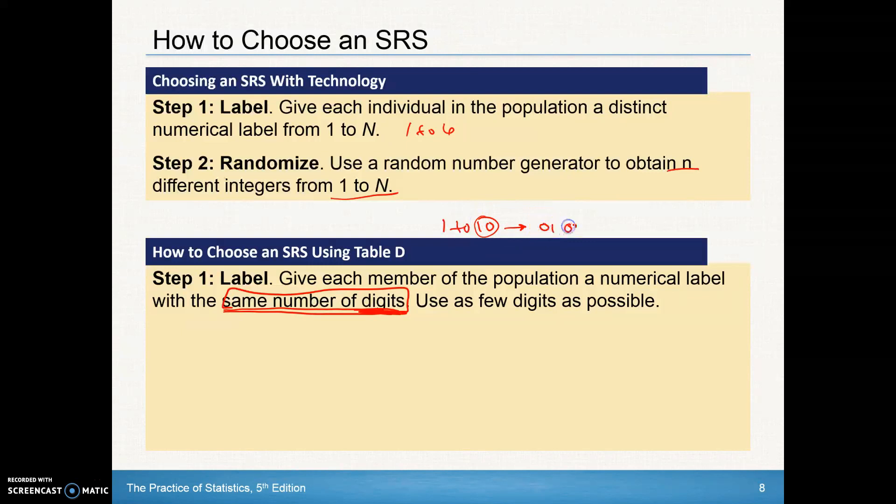So I'd assign it as 01, 02, 03, 04, 05, 06, 07, 08, 09, and then 10 because each of these would have two digits to them. That is very important when we're using table D that's in the formula packets for the AP exam. And then obviously use as few digits as possible. I don't want to go 001, 002, 003, and use three digits for that when the maximum number of digits is two.